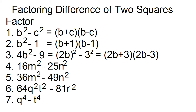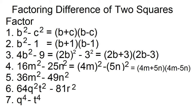Number four: factor 16m squared minus 25n squared. This can be written as the square of the quantity 4m minus the square of the quantity 5n. To factor, just copy 4m and 5n and write in the form sum and difference of two terms. The factors are 4m plus 5n and 4m minus 5n.